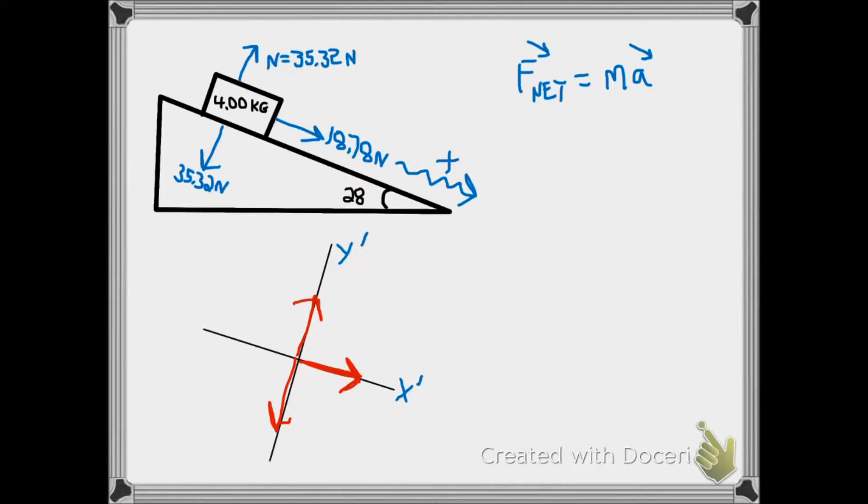Now doing F net equals MA in our new frame, we have 18.78 newtons equal to the 4 kilogram mass of the object times the acceleration. The acceleration will therefore be 4.69 meters per second squared down the plane.